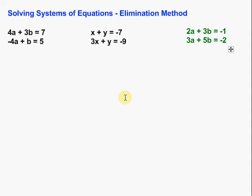Let's take a look at solving systems of equations using the elimination method. The elimination method allows us to solve systems by eliminating or getting rid of one of the variables when we have two. So for example, in this first set of equations, we have 4a and minus 4a. If we add those two equations together, the 4a's are going to cancel out, which allows us to solve for b, put that back in, solve for a, and we've got our solution.